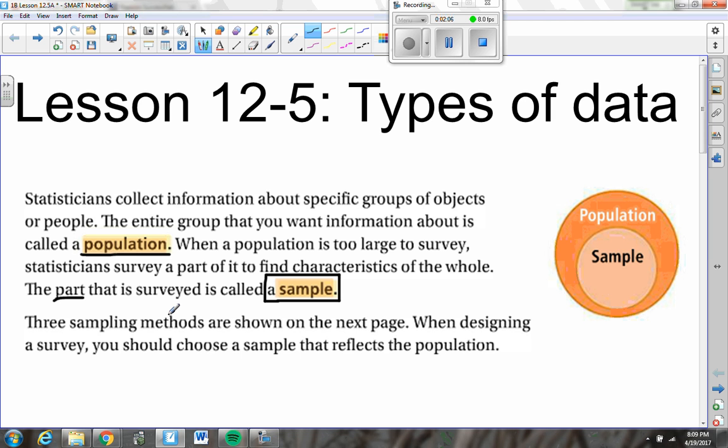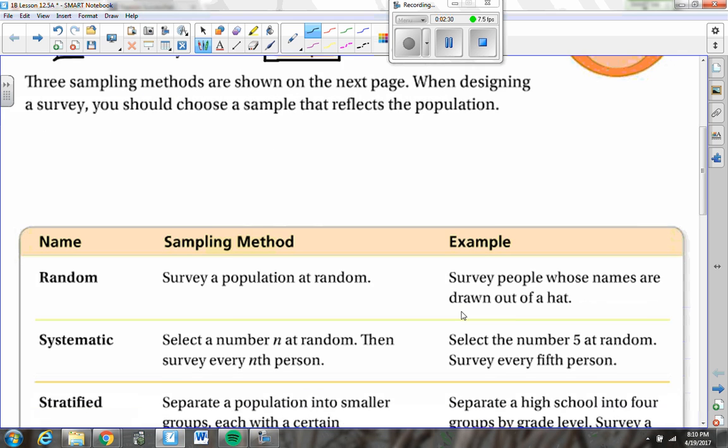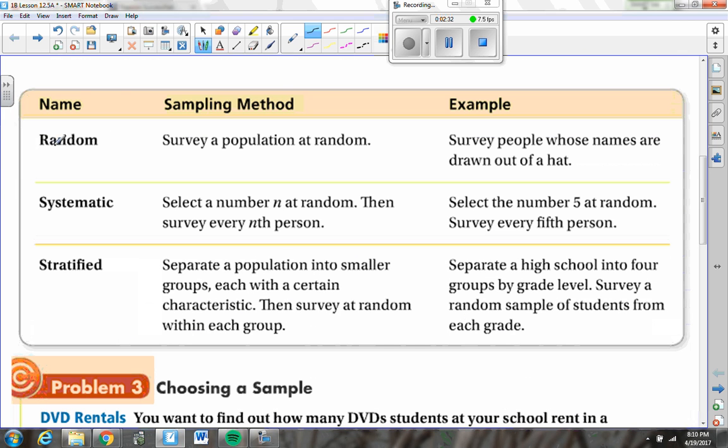Now, three sampling methods are shown below. I'm going to show you these three sampling methods. When you design a survey, you should choose a sample that reflects the population. All of these can be good sampling methods, but we'll talk about maybe why one is the best out of all of them, or in what situations maybe each one is best. The three sampling methods that we're going to talk about are random, systematic, and stratified.